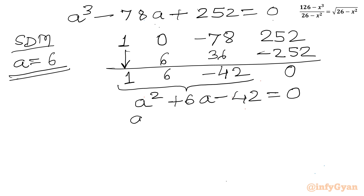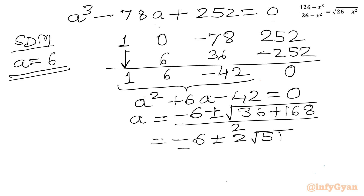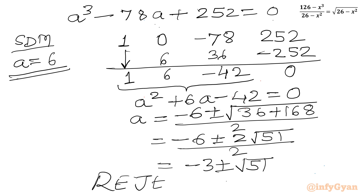Applying the quadratic formula: A equals minus 6 plus or minus the square root of (36 plus 168) all over 2, which gives minus 6 plus or minus 2√51 over 2, simplifying to minus 3 plus or minus √51. We reject these irrational solutions since we are looking for integer solutions — once a is irrational, x will also be irrational. So only a equals 6 is accepted.